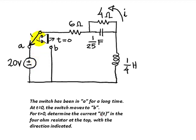At t equals zero, the switch moves to B. Find the current in this resistor as a function of time for t greater than zero.